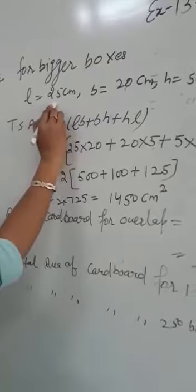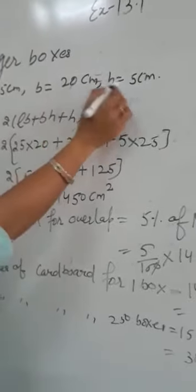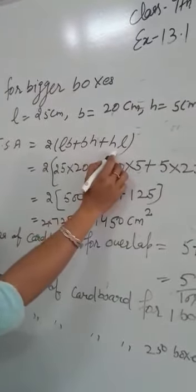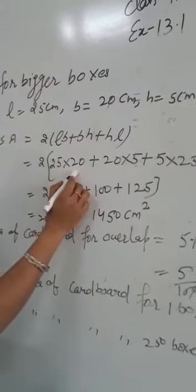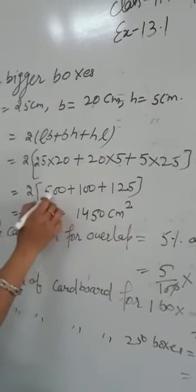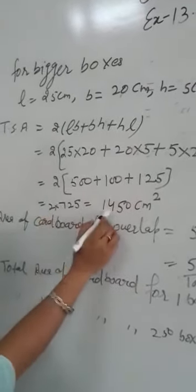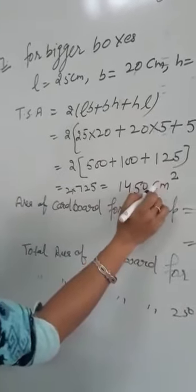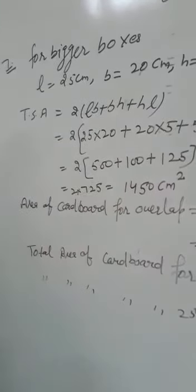Firstly length is given 25 cm, breadth 20 cm and height 5 cm. So we will use the formula 2(LB plus BH plus HL). Put all the values here in the formula and by doing the calculation we will get 1450 cm square. This is total surface area of one bigger box.